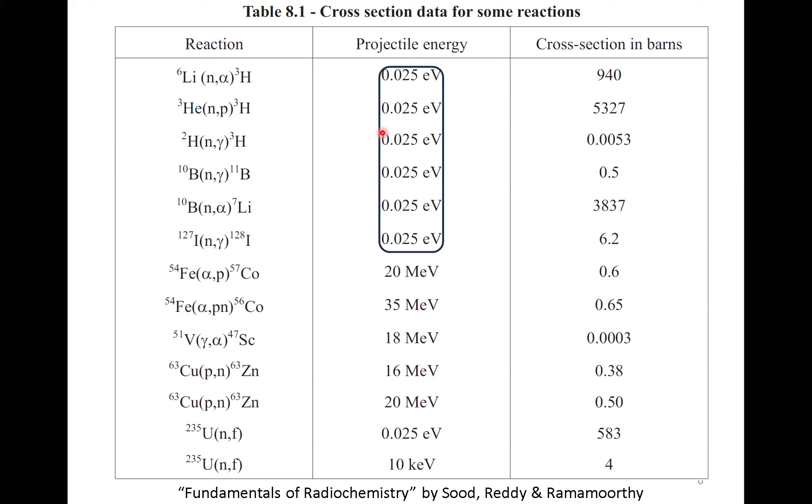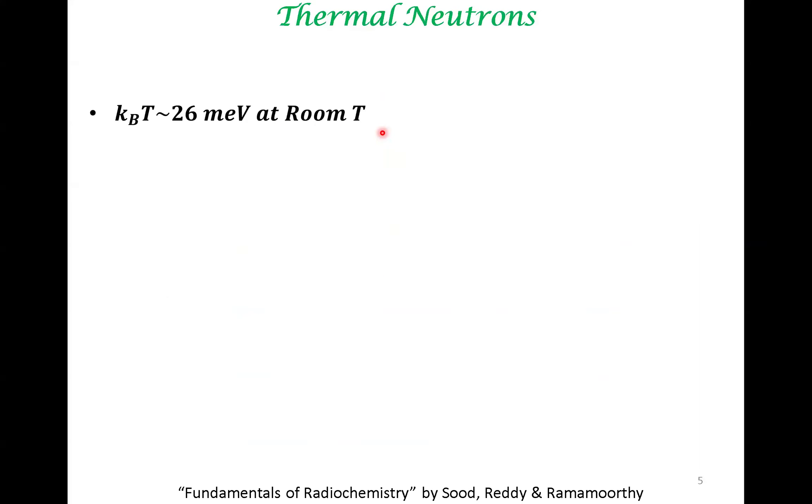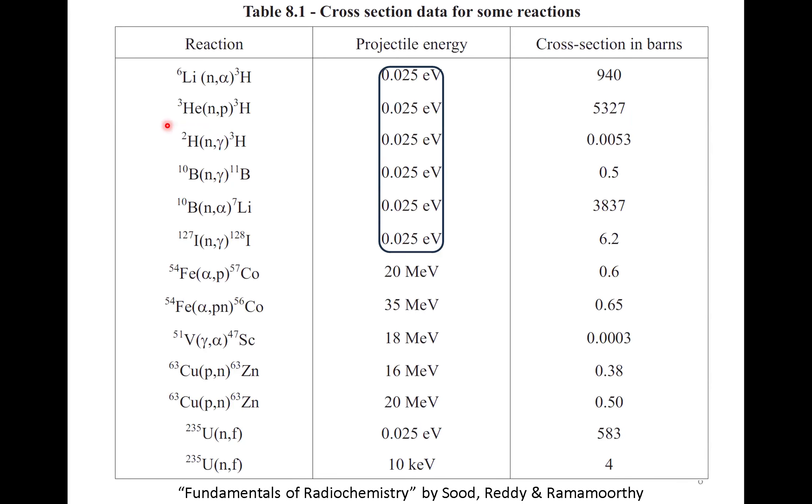This is a number we should not forget. 26 milli electron volts at room temperature, the value of Boltzmann constant times temperature. Remember, equipartition theorem says that every degree of freedom, a mode with which you can store thermal energy, has half kT at equilibrium. This is a number that you should have in mind.